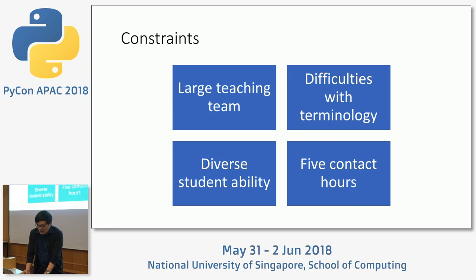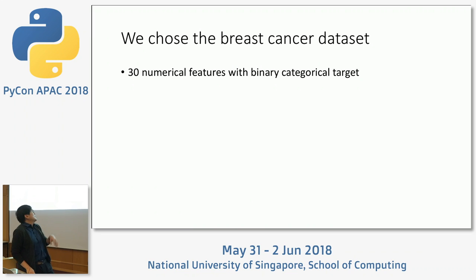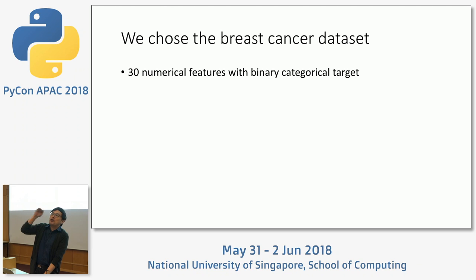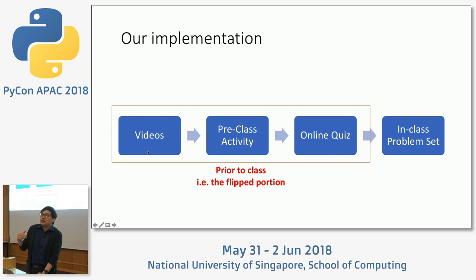Our starting point in machine learning is always a dataset. We chose the breast cancer dataset, which has 30 numerical features — that is, 30 measurements on breast cancer cells — and each row has a classification of whether the cancer is malignant or benign. For our implementation, we recorded videos to give students the idea of machine learning, had a pre-class activity with a worksheet to complete some Python code, and an online quiz for scores.